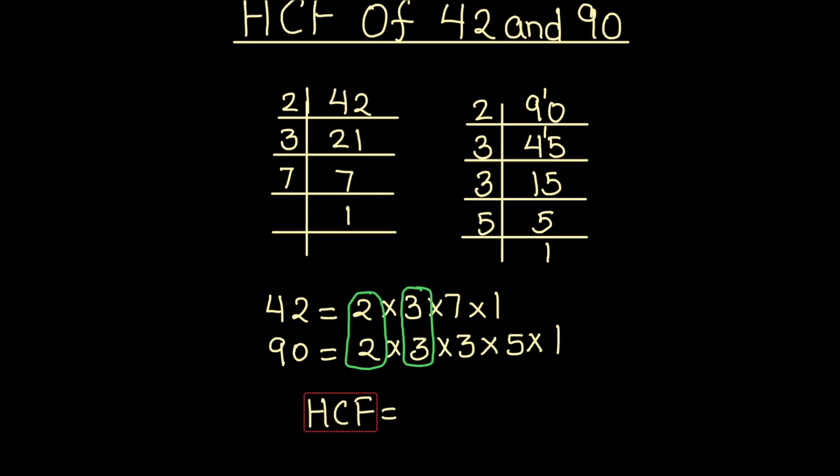For finding the highest common factor, we take the product of the common factors between the two numbers, and we write the common factors only once. Hence the HCF of 42 and 90 is 2 times 3, which equals 6. So the HCF of 42 and 90 is 6.